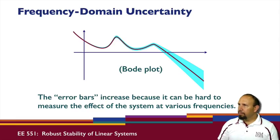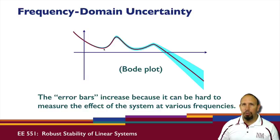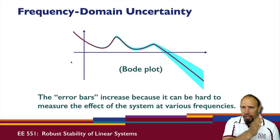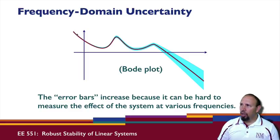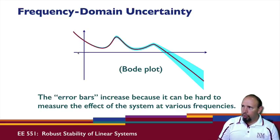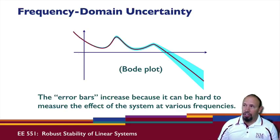By way of frequency domain perspective, we're able to get a Bode plot, or what is often referred to as a frequency response plot. This axis is magnitude, this axis is frequency. If we were to perform a series of experiments on the system and apply a sequence of sinusoids, applying a sinusoid at a particular frequency, we would look at the output — the magnitude and phase — and get a consistent magnitude.